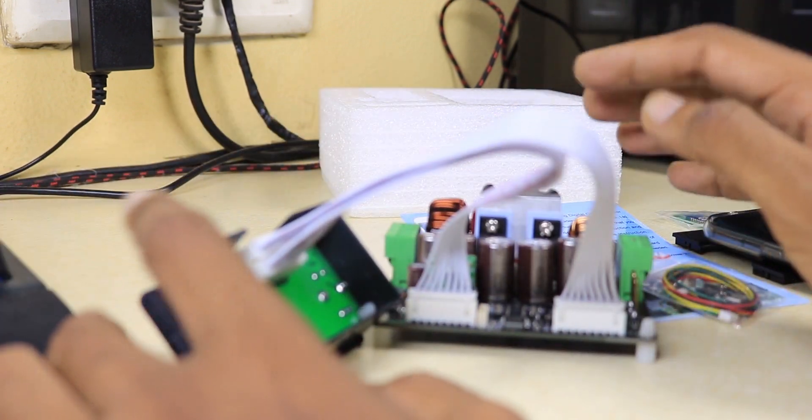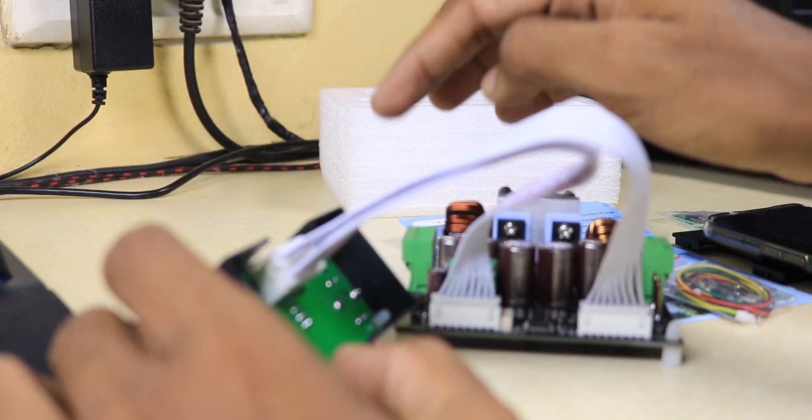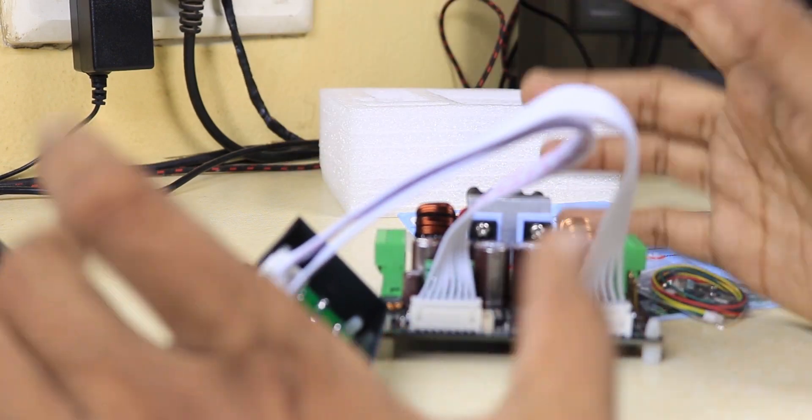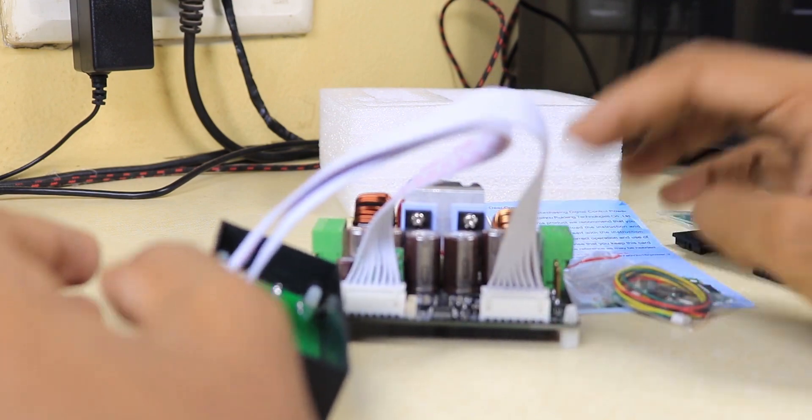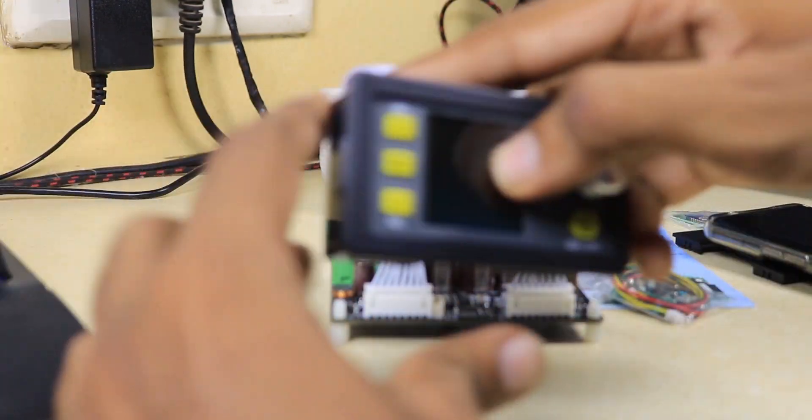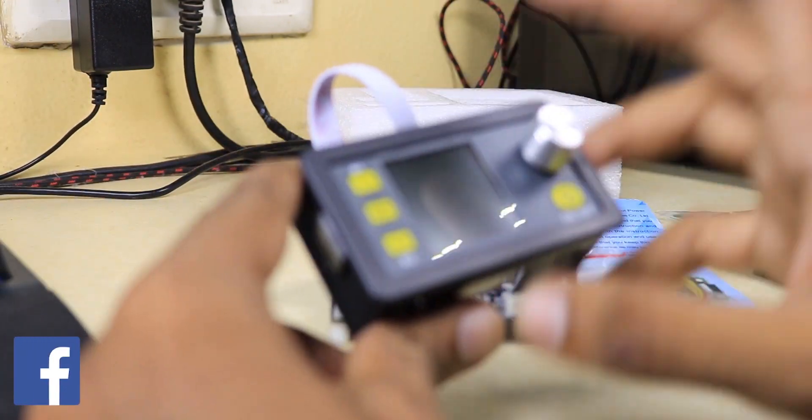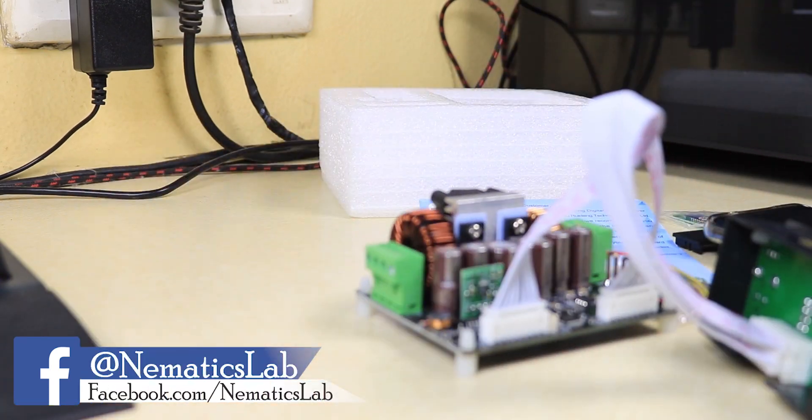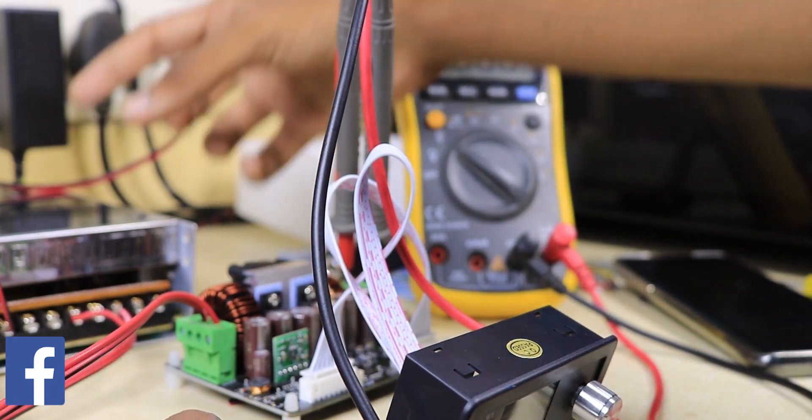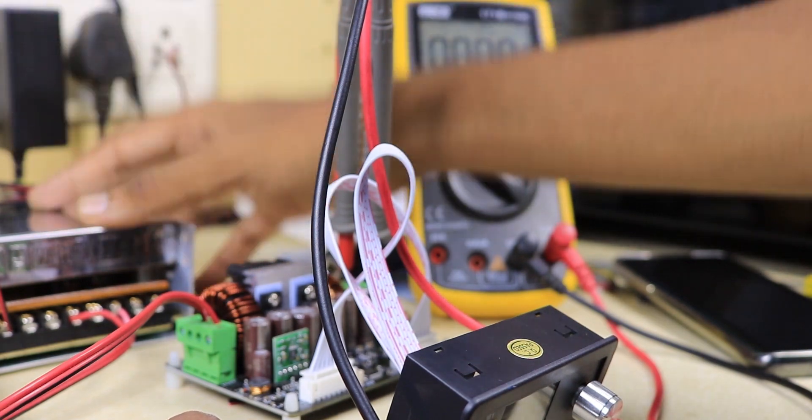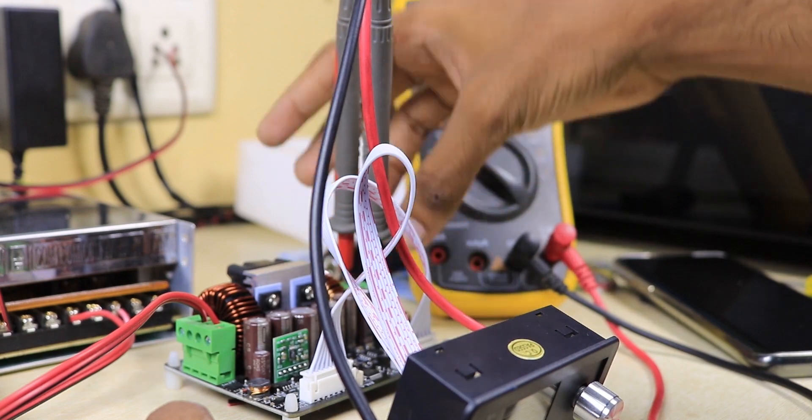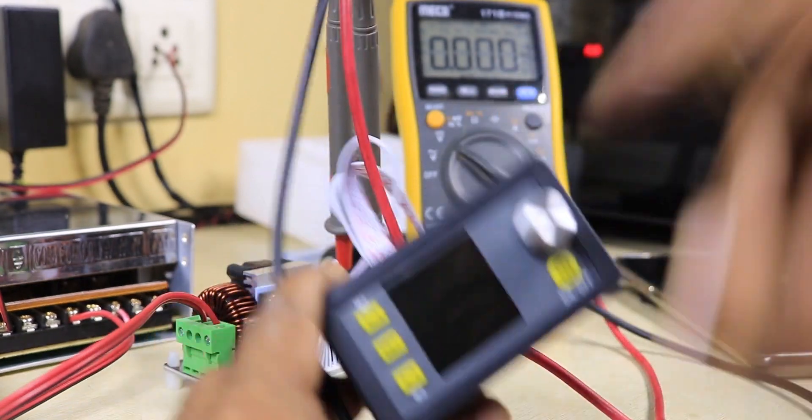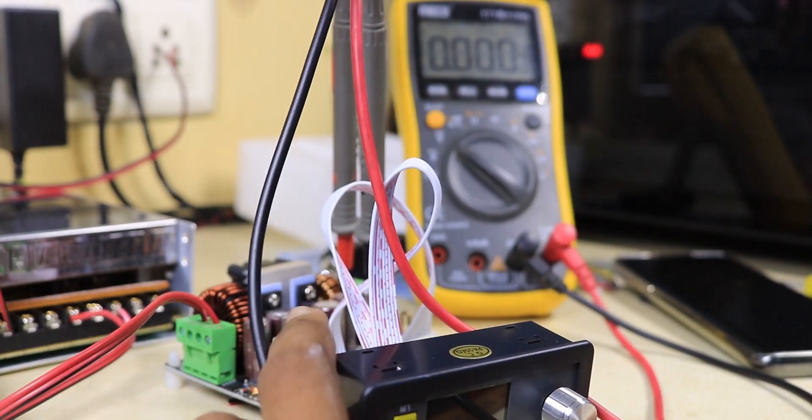Now I'll hook this to some input voltage. I'll use a 24 volt 10 amp SMPS and measure the output voltage to see how this functions and how to use it. I just finished hooking this up to the SMPS and connected a multimeter at the output so we can measure voltage and ensure there's no error. Let's power this thing up.